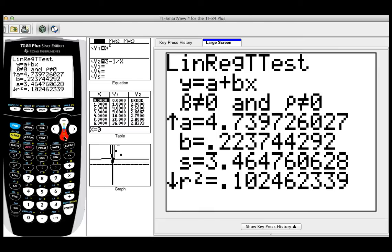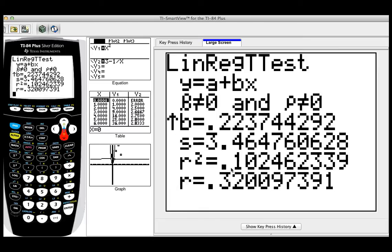It's going to give you the R squared, which is right here, 0.1024. It's going to give you the R, which is 0.32. And those are the values that we were looking for, the coefficient of correlation and the coefficient of determination.